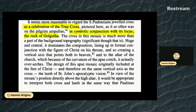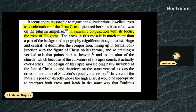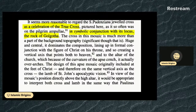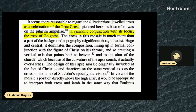Our author says it seems more reasonable to regard the Santa Pudenziana jeweled cross as a celebration of the true cross — pictured here as it so often was on the pilgrim ampullae — in symbolic conjunction with its locus, the rock of Golgotha. The cross in this mosaic is much more than part of the background topography. Huge and central, it dominates the composition, lining up in formal conjunction with the figure of Christ on his throne, creating a vertical axis pointing both to heaven and to the altar of the church. Because of the curvature of the apse conch, it actually overarches. The design of this apse mosaic originally included, at the feet of Christ and therefore on the same vertical axis as the cross, the lamb of Saint John's apocalyptic vision.